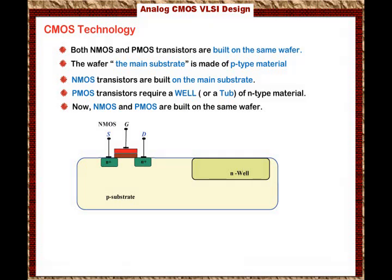The body has a contact with a P-plus type material that is connected to the lowest voltage in the circuit, which is usually ground. For some analog circuits, that can be a negative voltage. So the body of the substrate is connected to the lowest voltage of the integrated circuit.